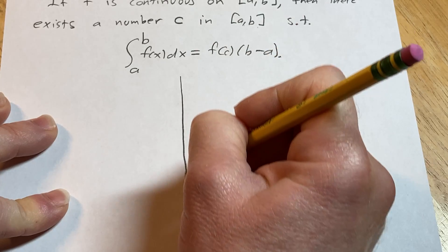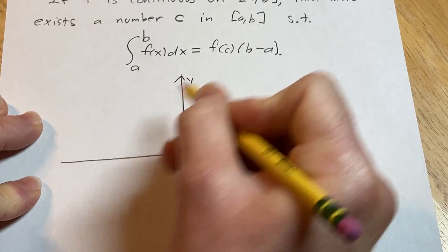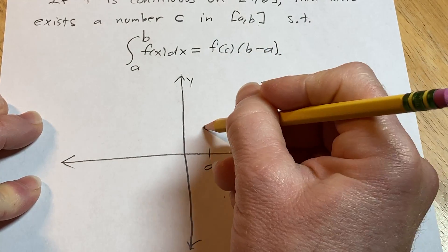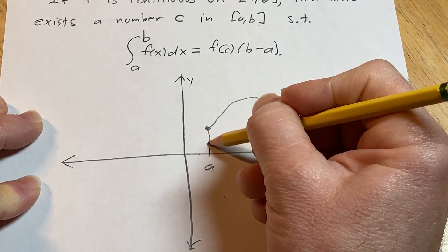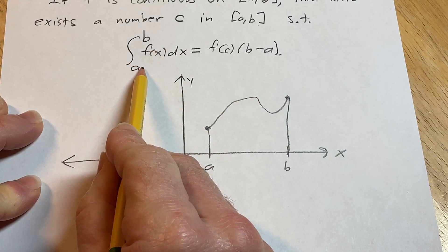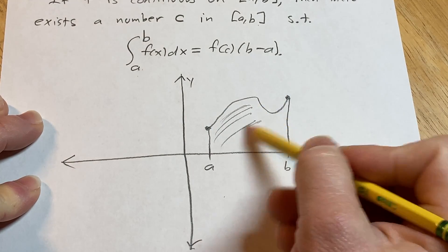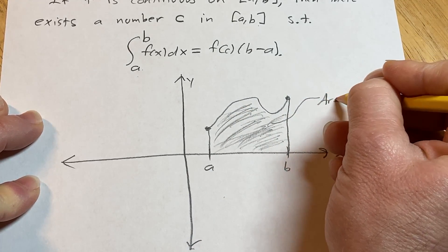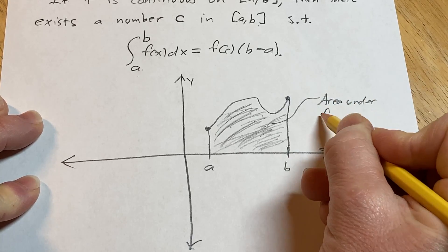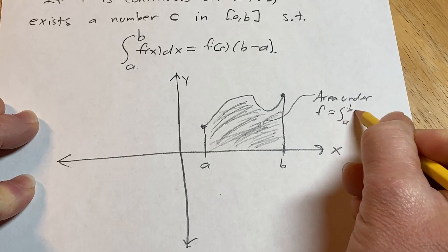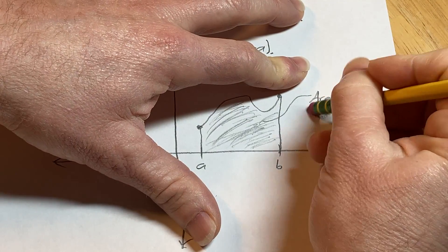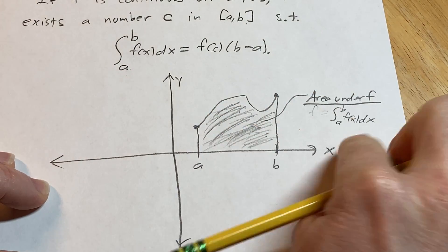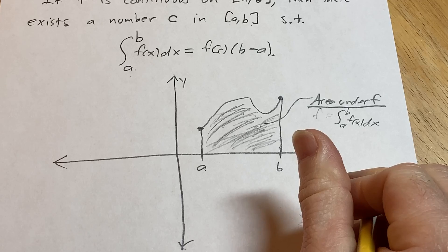Here's the coolest part graphically. We have the x and y axes, with point a and point b on the x-axis, and some continuous function f drawn between them. The definite integral from a to b of f(x) dx represents the shaded region — the area under the graph. So the area under f equals this definite integral, which calculus lets us compute.